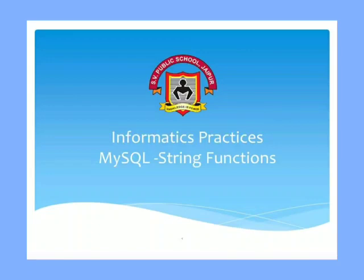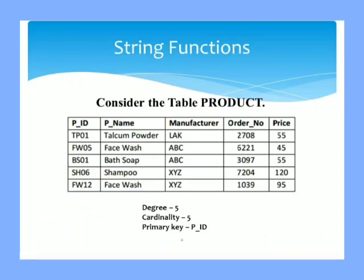Let's begin with string functions. Consider this product table with the following attributes: PID which stands for product ID, PNAME for product name, manufacturer, order number, and price. We have degree as 5 because attributes are 5 and cardinality of this table is 5 because rows are 5. The primary key is PID because it is unique.